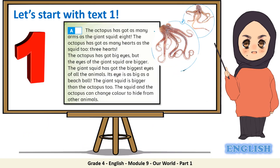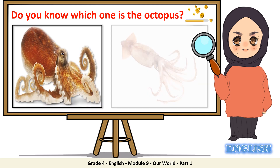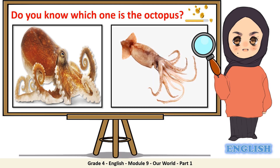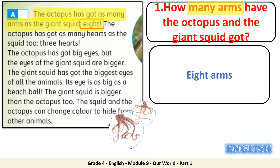Let's start with text 1. Do you know which one is the octopus? This one is the octopus because we know that the second one is the squid. Question 1: how many arms have the octopus and the giant squid got? Let's highlight the keyword: many arms. The answer is 8 arms. Well done!